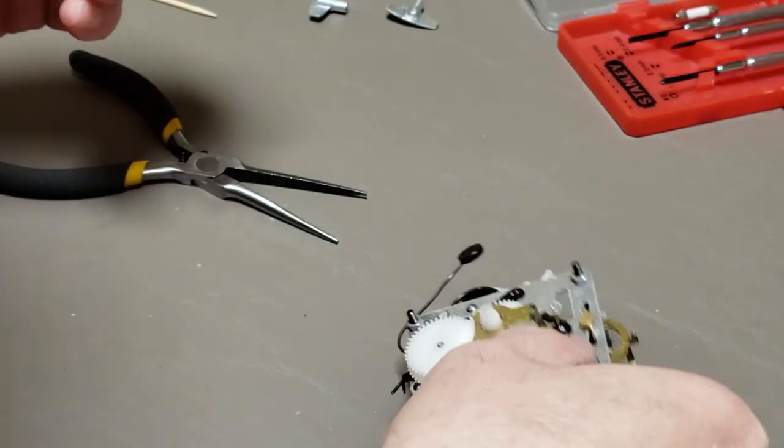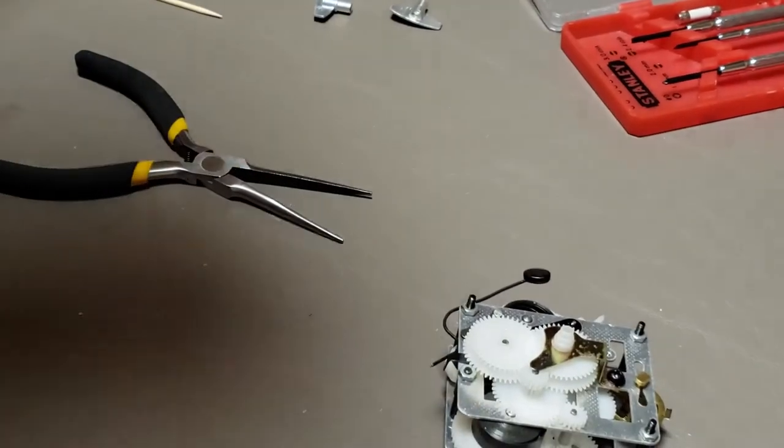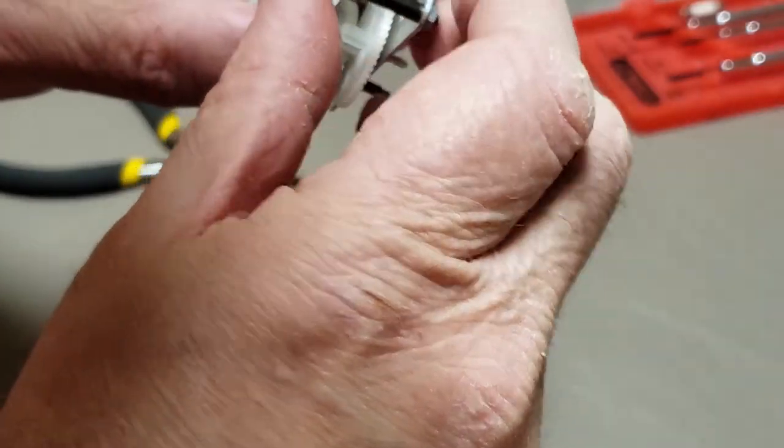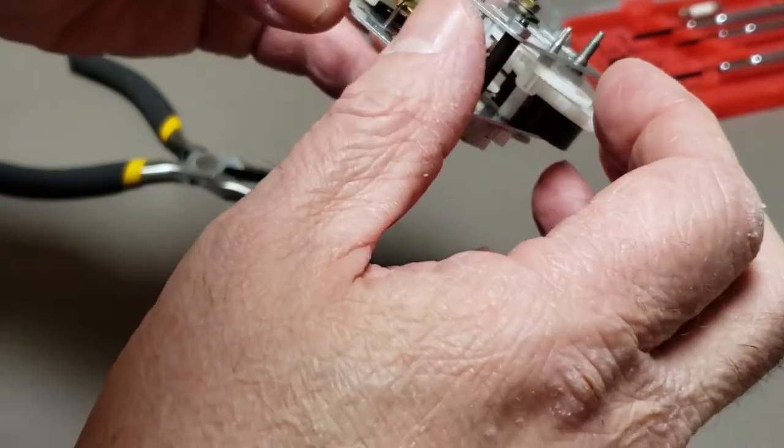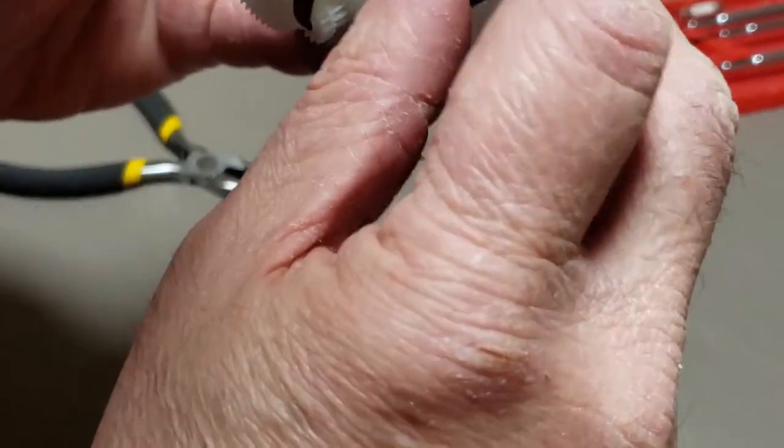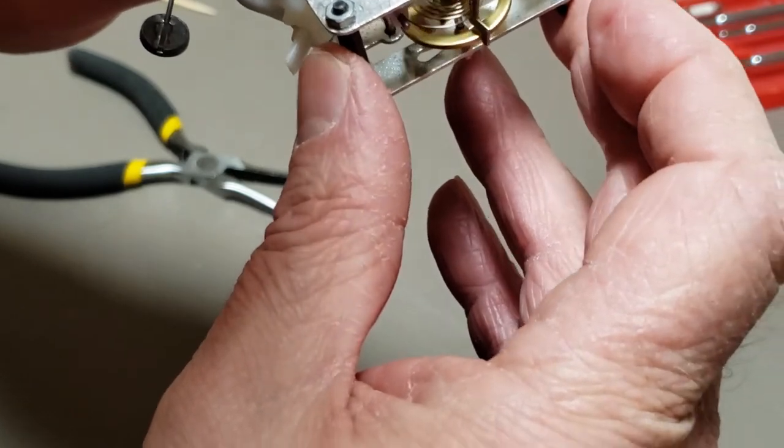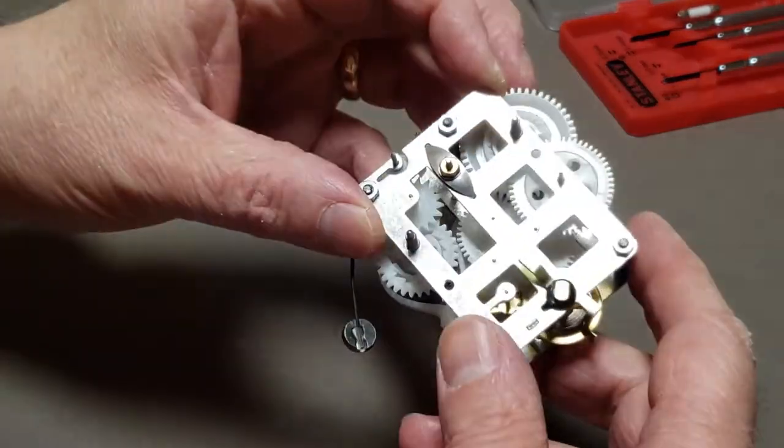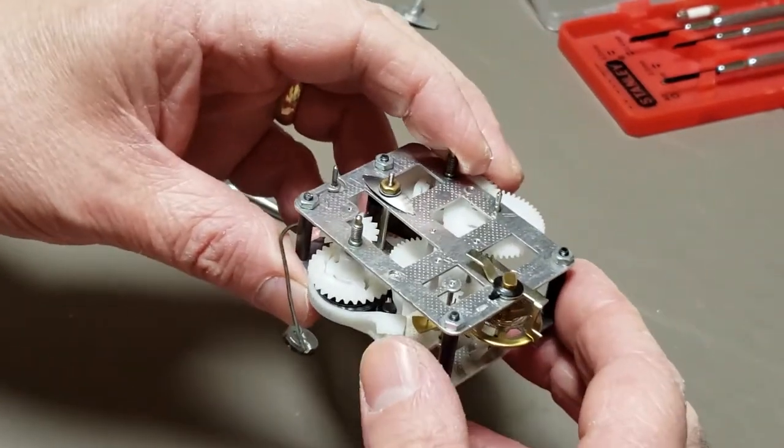That's a little better. It still stops. I wonder why. Oh, for one thing I see that the escape wheel isn't moving when the fork goes back and forth. That's bad.